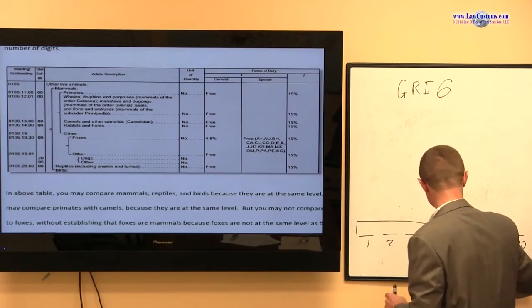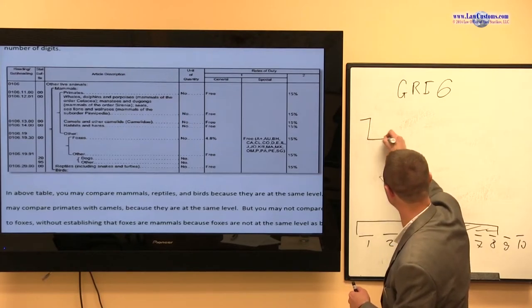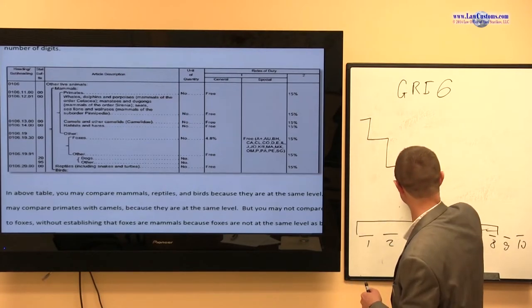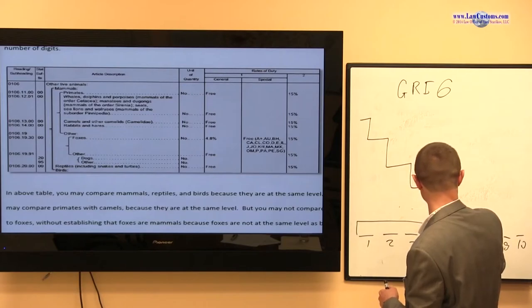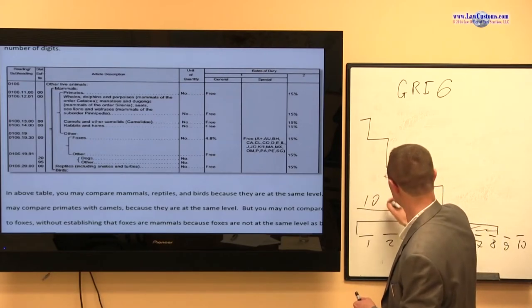So GRI-6 is all about asking questions at this level. Once you've figured it out, you go to the next level, you go to the next level, and you go to the next level until you hit the 10-digit bottom.